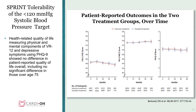The tolerability of the less than 120 target on quality of life is shown on this slide. The lines for the less than 120 versus the less than 140 targets essentially overlap in terms of quality of life, as published in 2017. There appears to be no difference whether discussing physical symptoms, mental symptoms, or depression. Patient-reported outcomes on quality of life were no different in either treatment group.